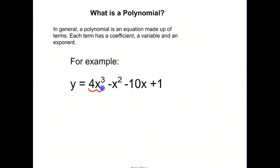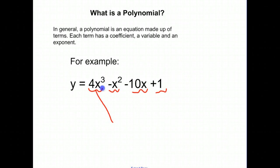Each term, I'll circle. So, this is a term, this is a term, negative 10x is a term, and 1 is a term — all separated by a plus or minus sign. So, each of these are terms.